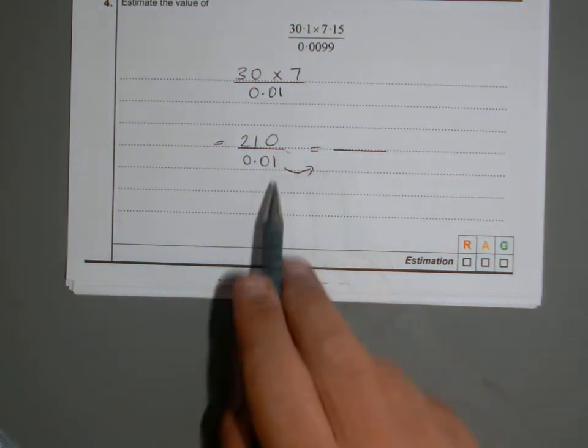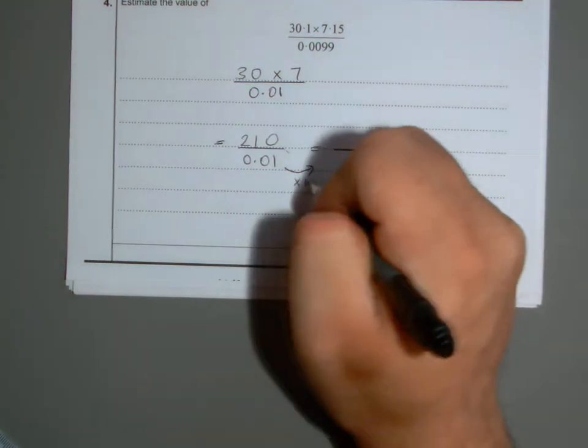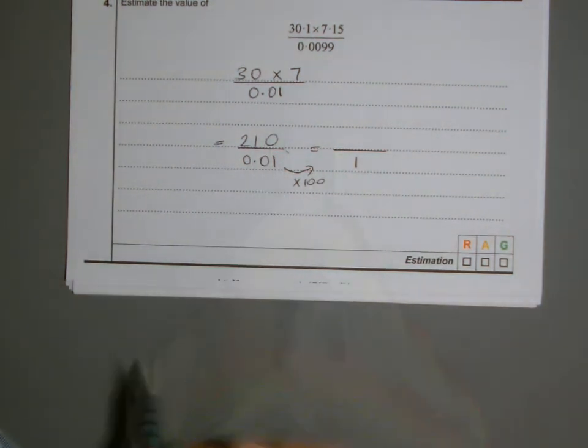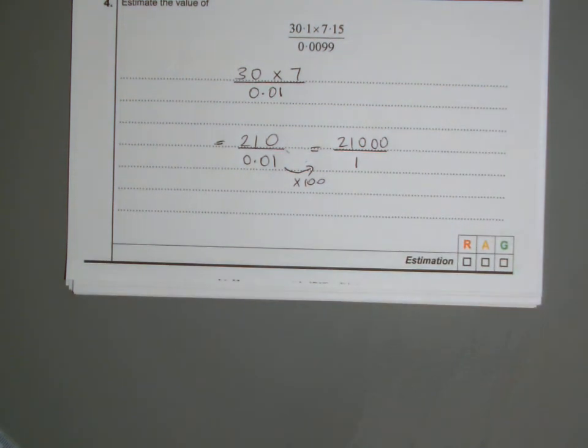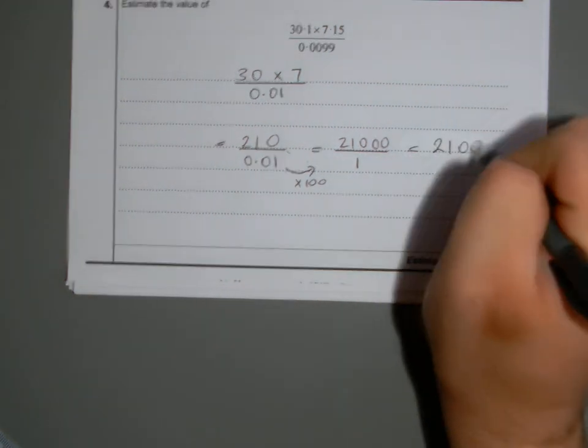100, because that's 100ths. If I multiply by 100, it'll be whole. But you've got to multiply the top by 100 too. When you multiply the top by 100, you just add two zeros, so you get 21,000 divided by 1, which is 21,000.